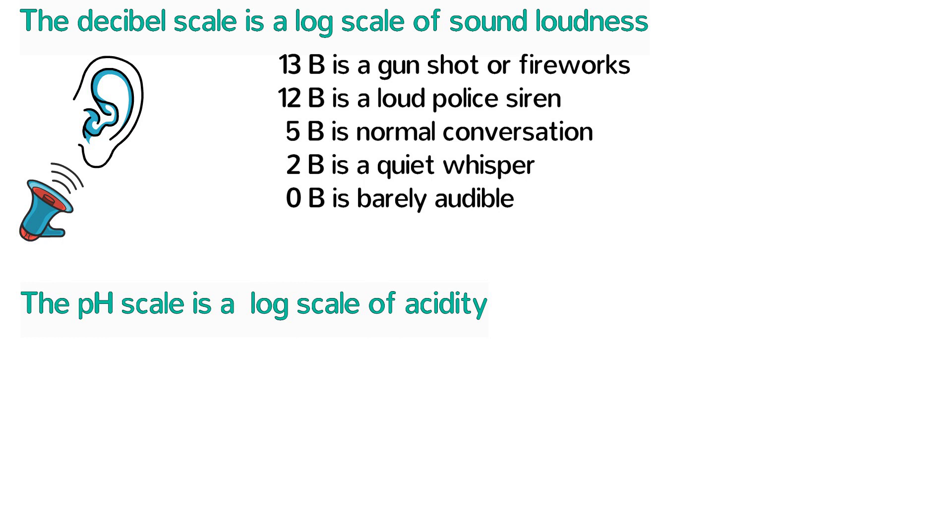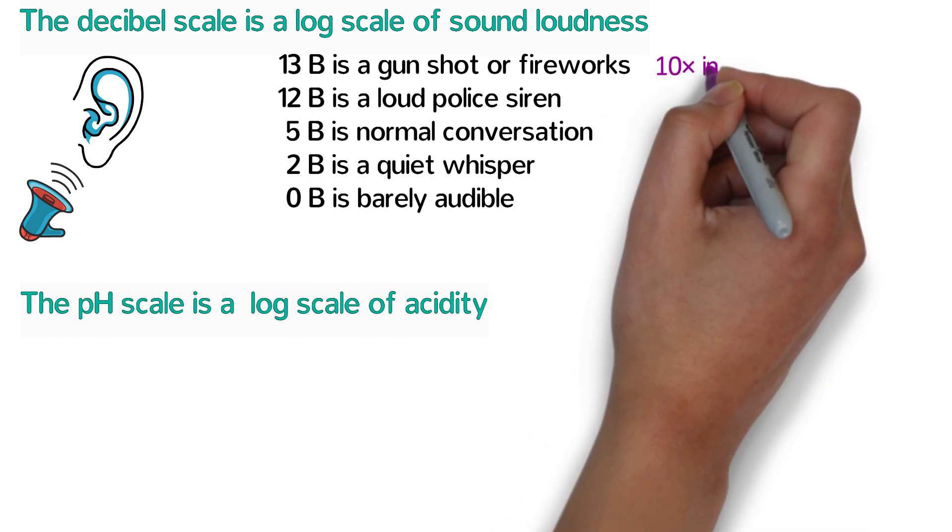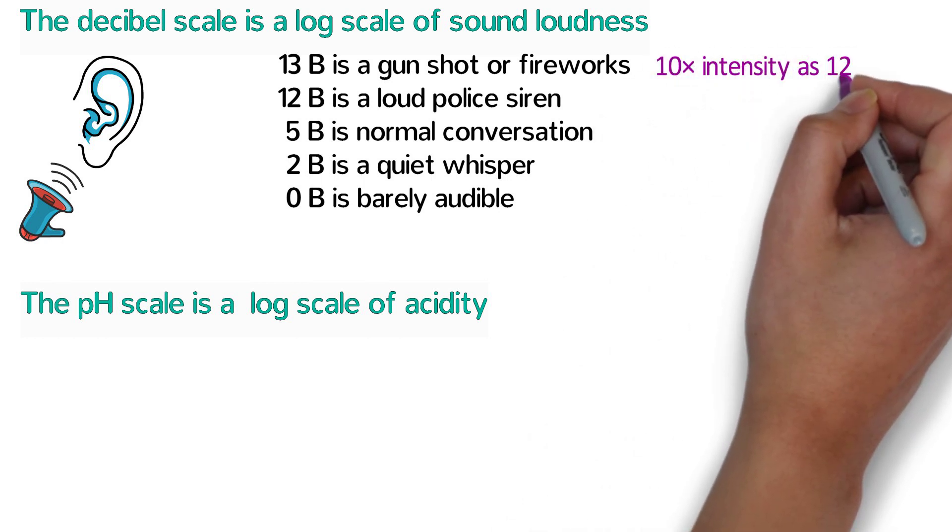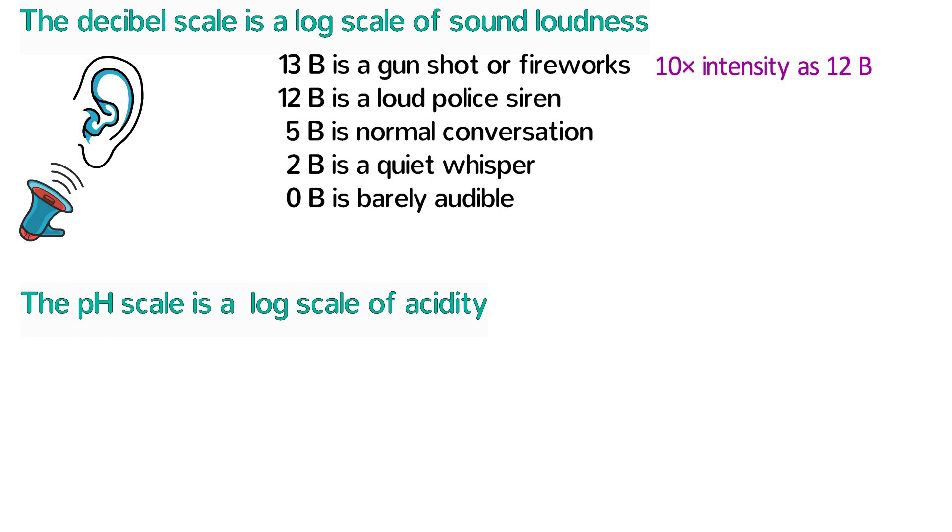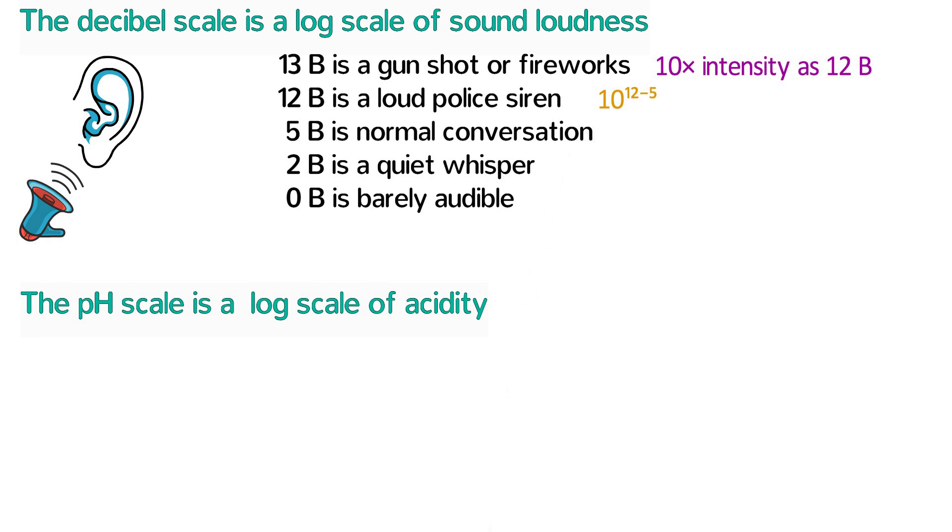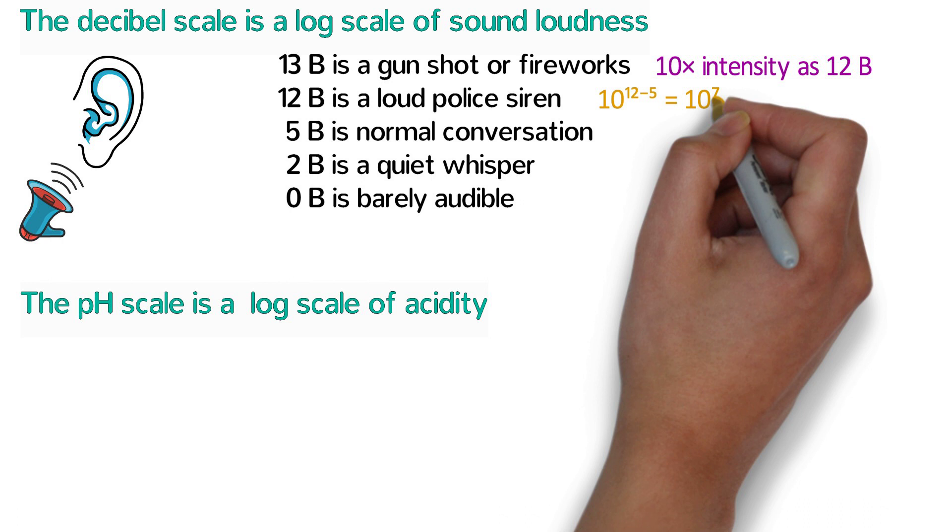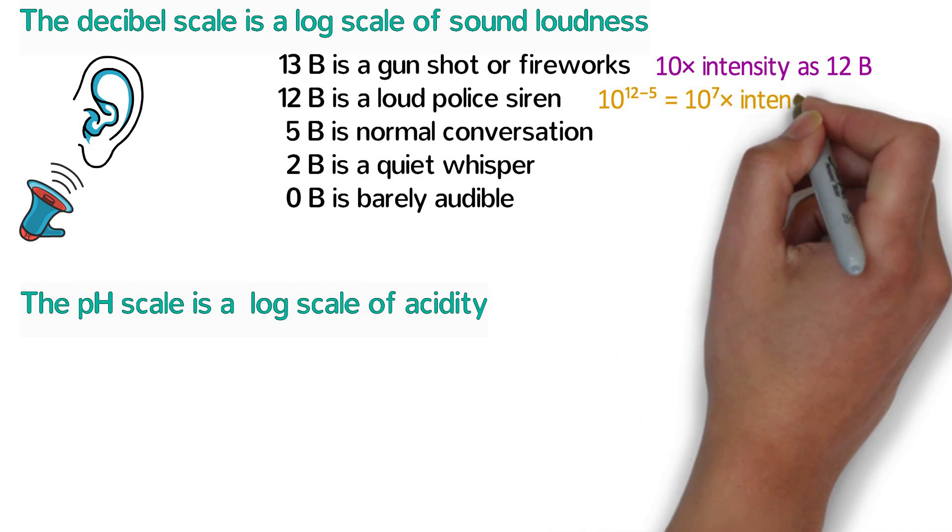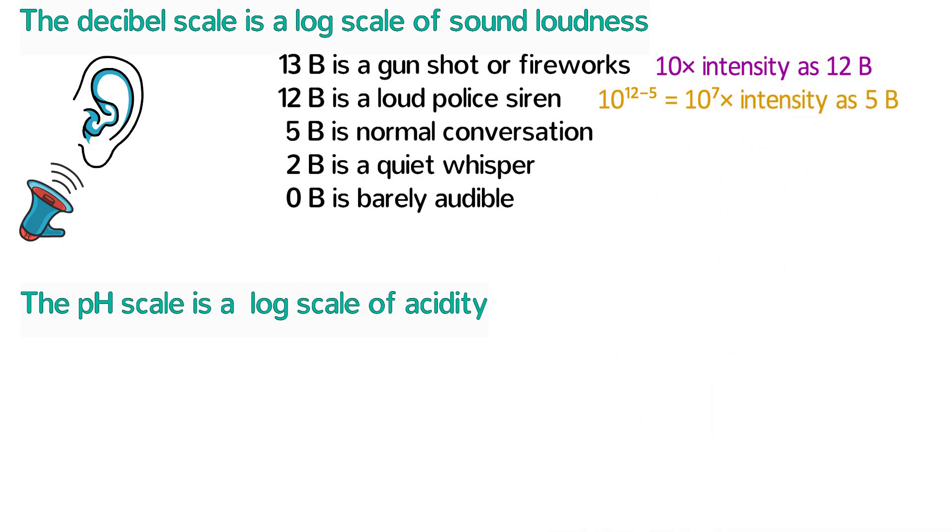Because it's a log scale, thirteen bells has ten times the sound intensity as twelve bells, and if you compare twelve bells with five bells, twelve bells is ten to the twelve minus five power times as intense. That is ten to the seventh power or ten million times as intense as the sound of five bells.